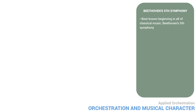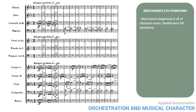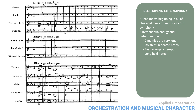Think of the best known beginning in all of classical music: Beethoven's Fifth. It suggests tremendous energy and determination. The dynamics are very loud; there are insistent, repeated notes at a fast, energetic tempo. The long-held notes, the fermatas, give a feeling that the powerful energy is being restrained, under control. From the point of view of orchestration, the strings and the clarinets all playing together in octaves projects a sense of unified purpose. There's no dissent. The use of only the middle and low registers also enhances the serious character of this beginning.